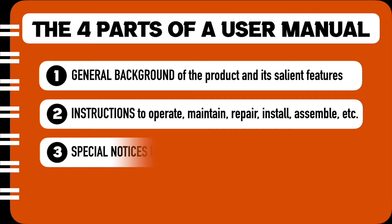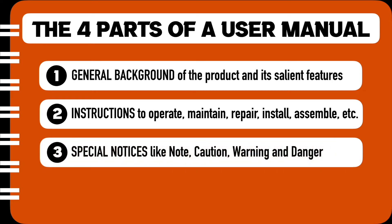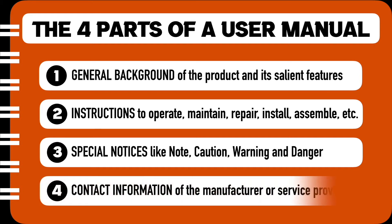The third part of a user manual consists of special notices like note, caution, warning, and danger. And the last aspect of a user manual is the contact information of the manufacturer of the product or a service provider.